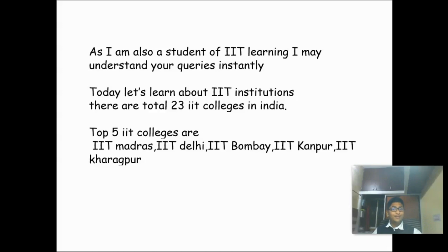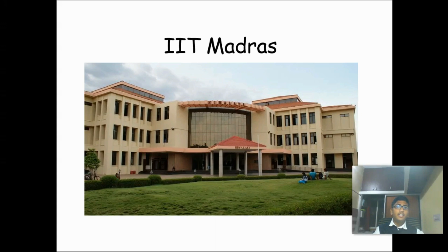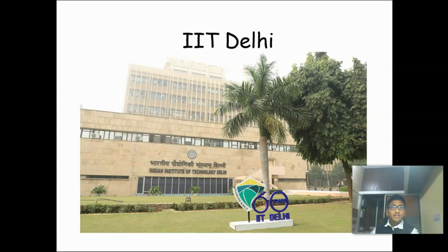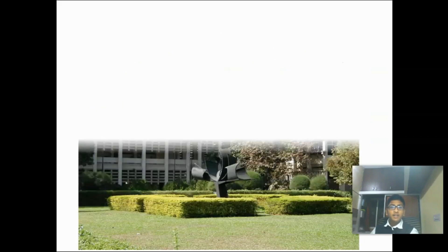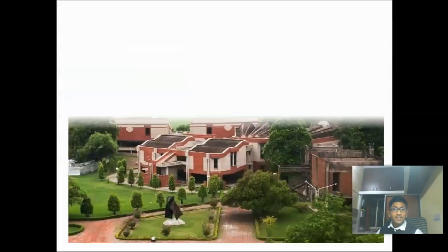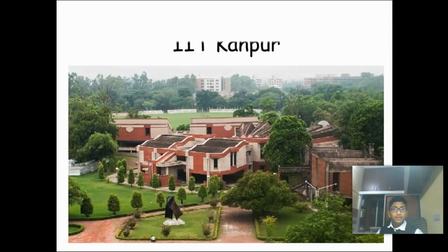Today let's learn about IIT institutions in India. There are a total of 23 IIT institutions in India. The top 5 institutions are Madras, Bombay, Kanpur, and Delhi. Let's see one by one images of the IIT colleges — this is IIT Madras, next is IIT Delhi, then IIT Bombay, and next is IIT Kanpur.